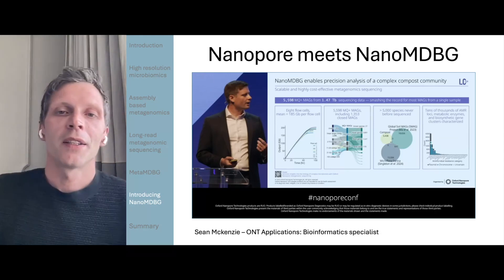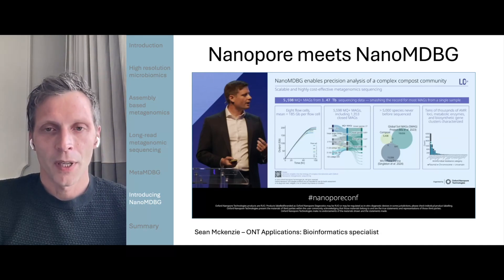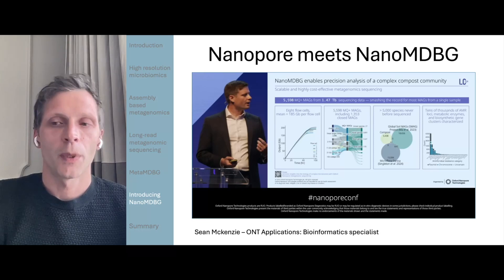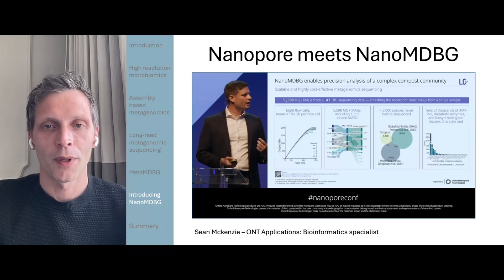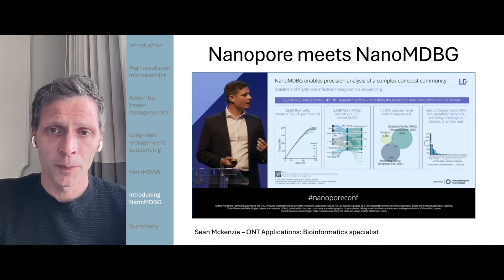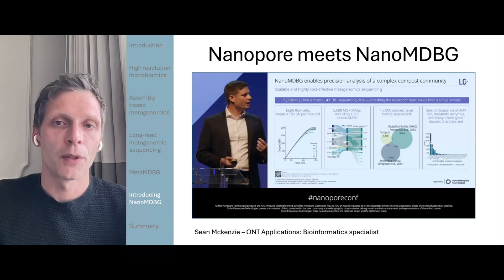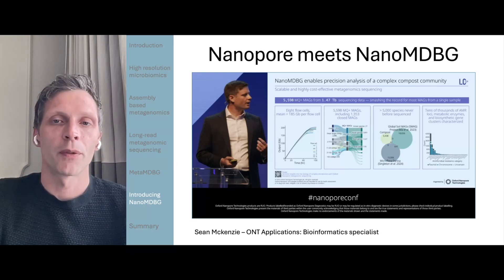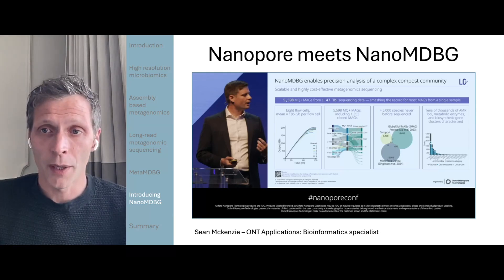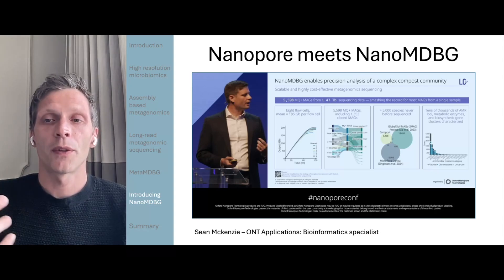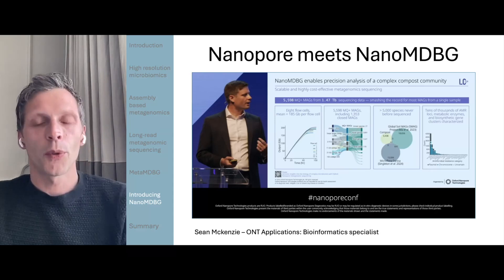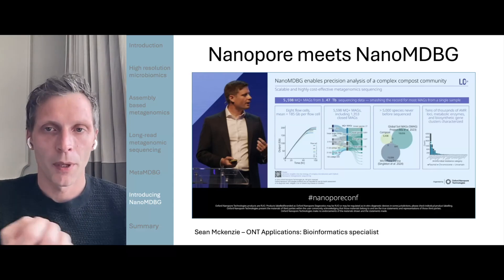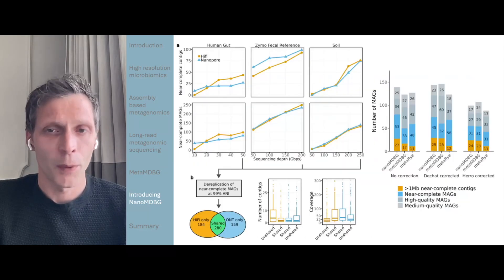Nanopore actually managed to get hold of this and use both our DNA extraction and library prep protocols as well as Nano-MDBG on eight flow cells, getting a mean throughput of over 185 gigabases per flow cell. They managed to recover over five and a half thousand medium to high quality MAGs from a total of 1.47 terabases of sequencing data. They were also able to identify a large number of AMR loci as well as hundreds of biosynthetic gene clusters that they were able to characterize. However, what they were not able to do was show a gigabase-by-gigabase bake-off between PacBio and Nanopore, which is exactly what we did.